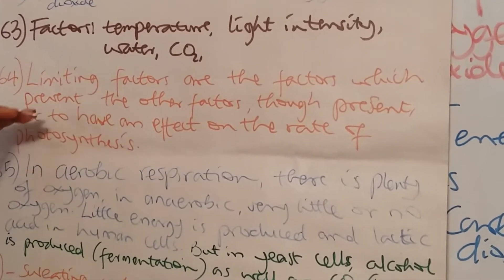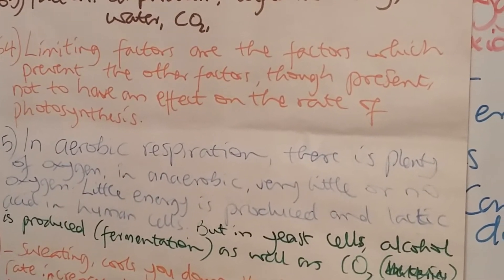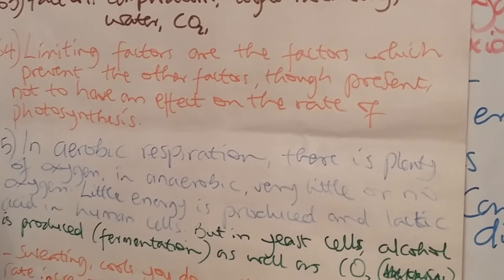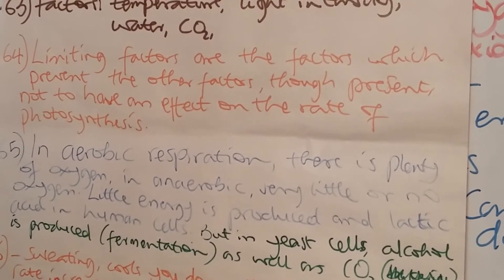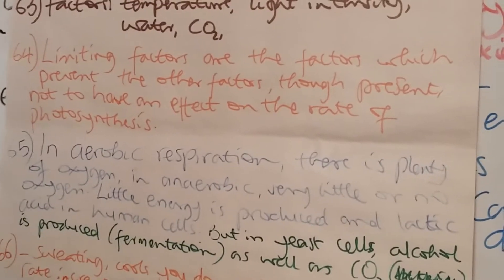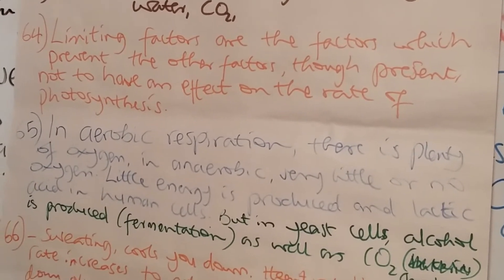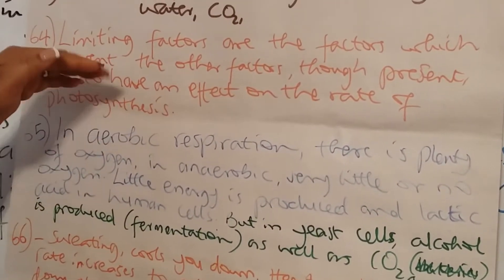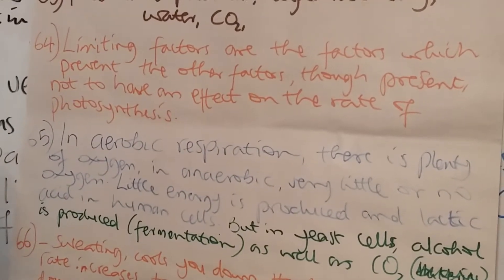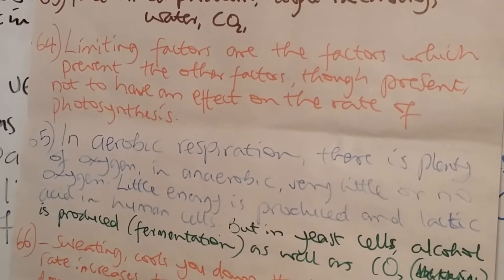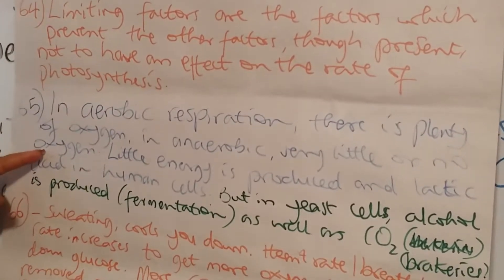Question 64 talks about limiting factors. What are limiting factors? They are the factors which prevent the other factors — though present — from having an effect on the rate of photosynthesis. A limiting factor is the one that's stopping other factors from having the desired effect on the rate of photosynthesis.